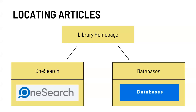So locating articles. On the library homepage, there are two ways to go about locating articles. One being OneSearch, which is the search bar that appears right on the library website when you immediately click on it. Another way is through our databases. Either one of these avenues is fine for searching for articles — they both will give you similar but not exactly the same results. So it's really up to you how you want to go about looking for your articles.